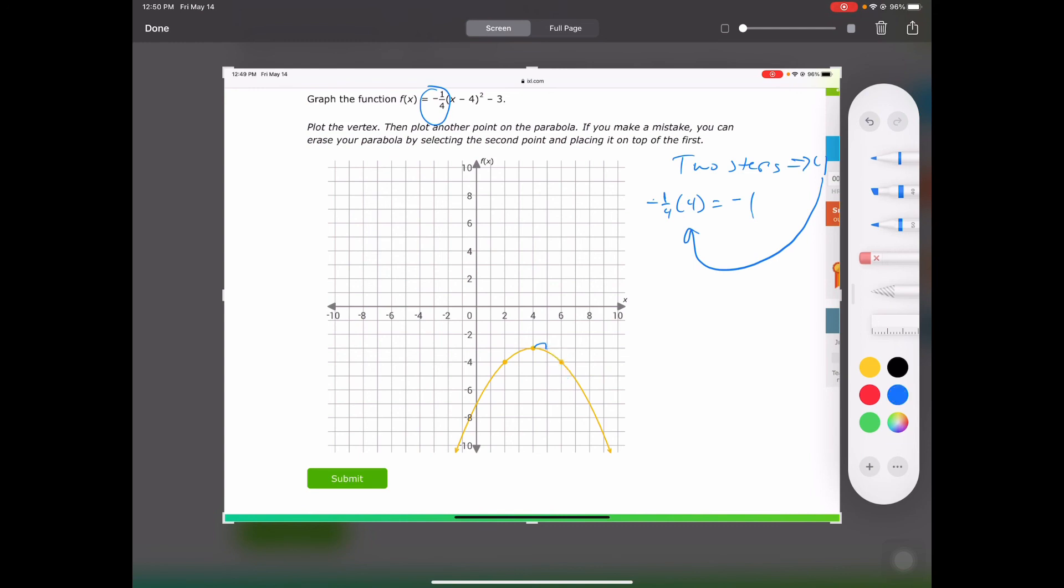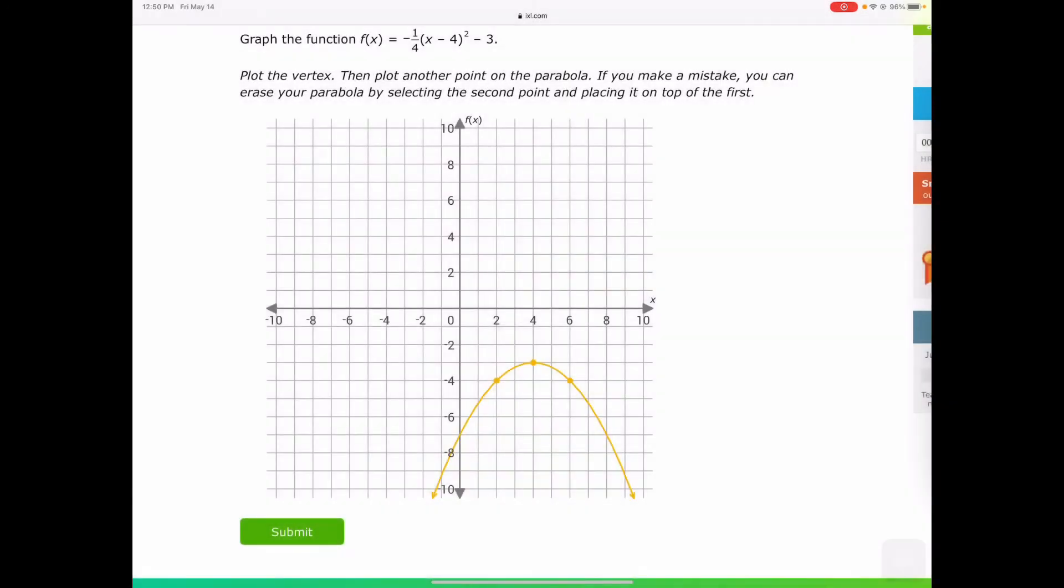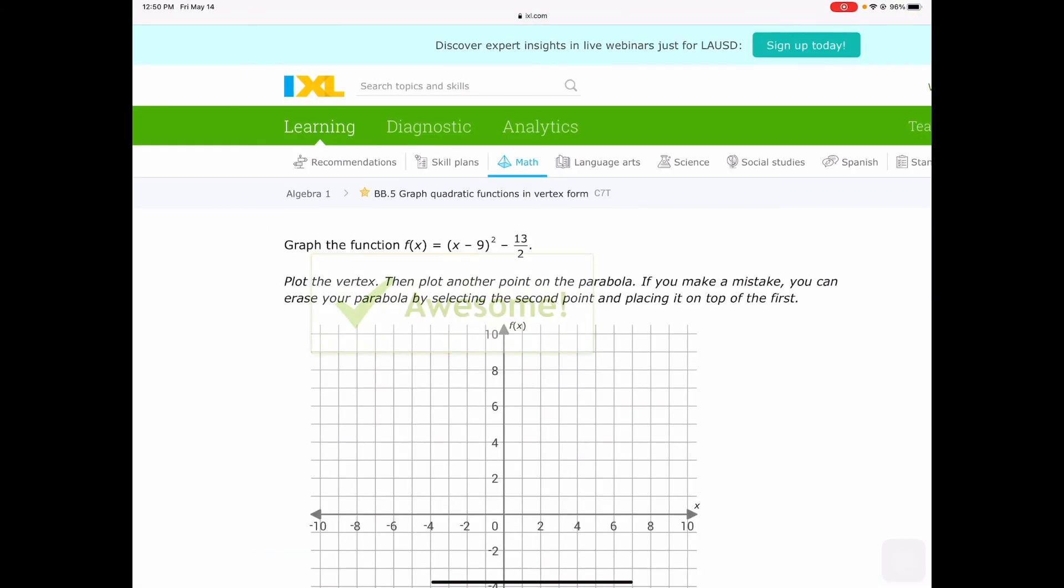Let me show you that one more time. At two steps over, sorry, one step over, we are one-quarter of the way. See how that's barely one-quarter? But we weren't able to draw that, so we took the next bigger step. At two steps, it should have been four steps down. But because we multiplied by negative one-fourth, it's only one step down. Okay, perfect.